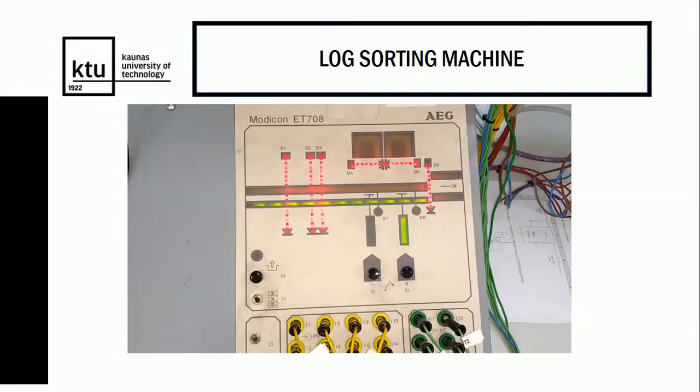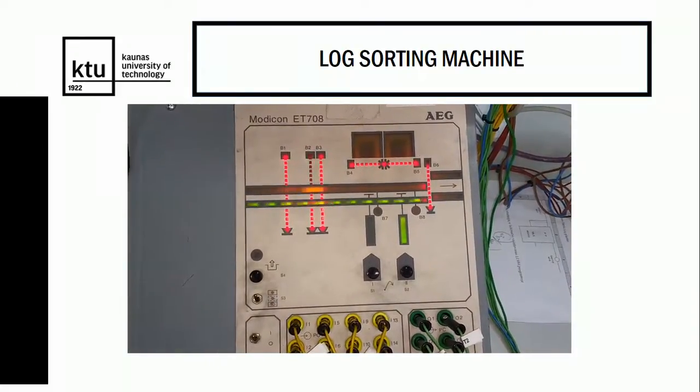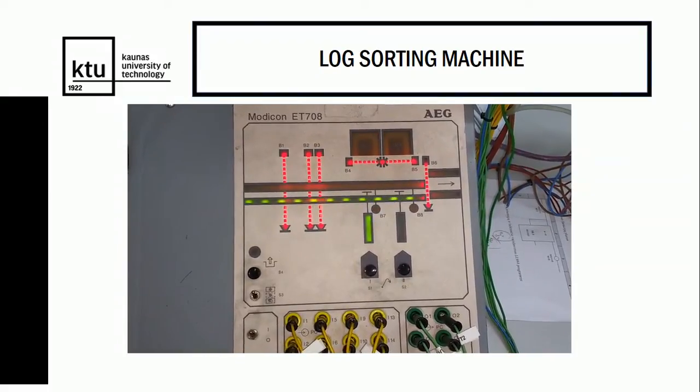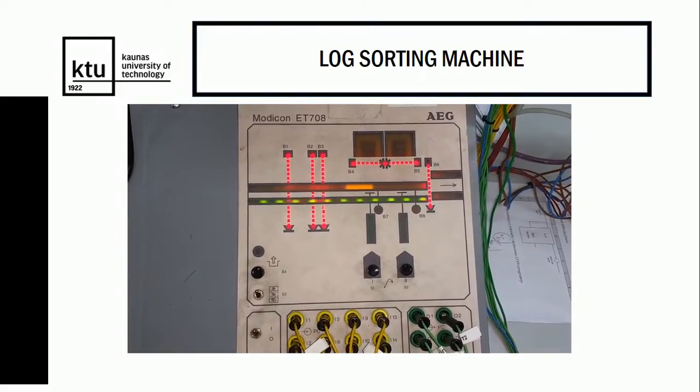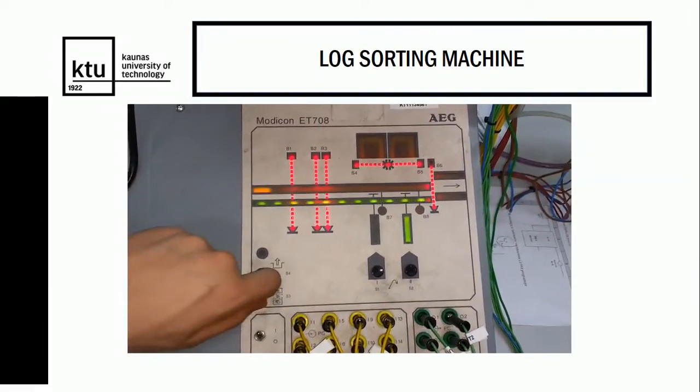Here is a small example of the kit provided by Schneider Electric. It is a log sorting machine. So we will sort the smallest log in box 1 and the medium size one in box 2, and the longest one will go past the conveyor.